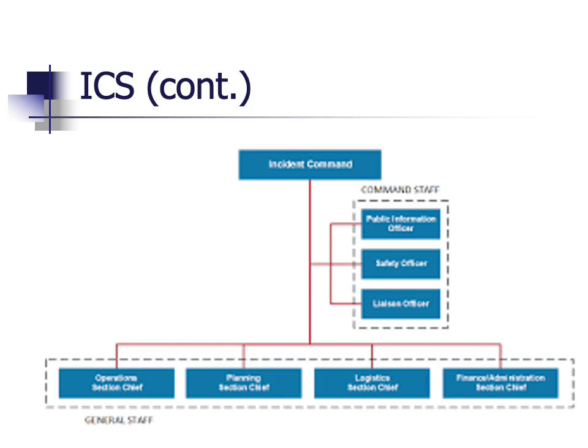Under Incident Command, there are four sections. Planning helps to determine what is going on with the hazard and what must be done now and in the future to address life safety and other issues. Operations implements the plan and addresses all functions that must be performed in the emergency or disaster. Logistics provides all of the human and material resources required to implement the plan and fulfill life-saving operations. Finally, finance and administration tracks expenses and ensures payments are made to the appropriate party.